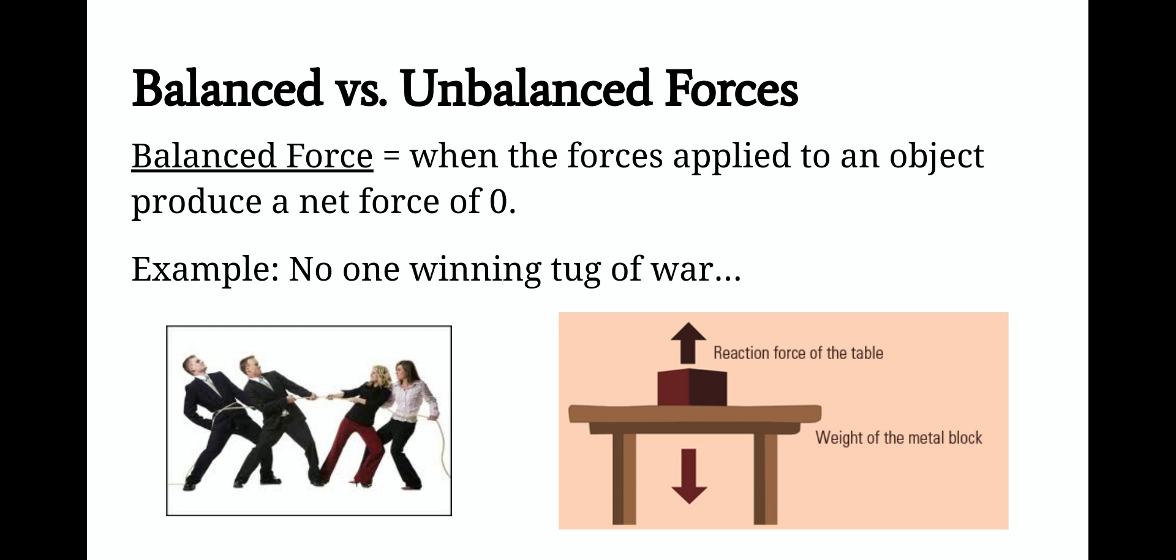We have two types, basically. We have a balanced force and an unbalanced force. A balanced force is when the force applied to an object produces a net force of zero. A great example of this is no one winning a tug of war. The force that's being applied in both directions is balanced out. So therefore, there is zero movement.